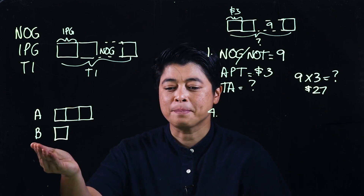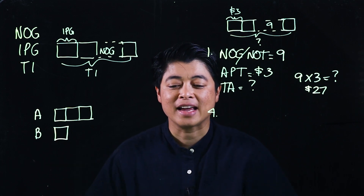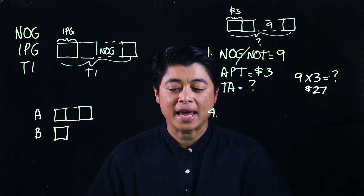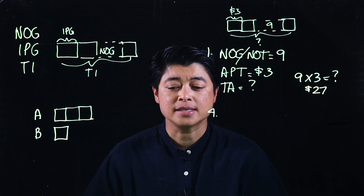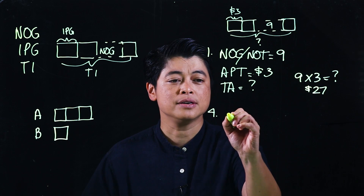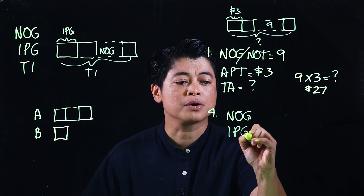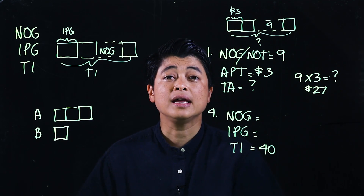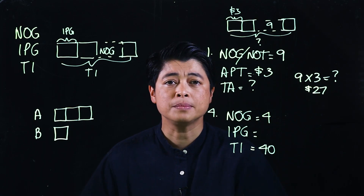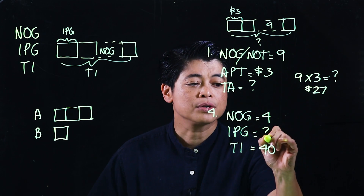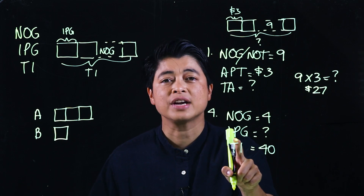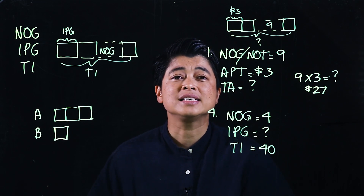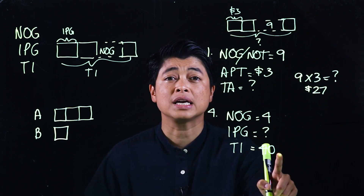For number four, a bar model is important when comparing. Problem four says: James baked 40 cupcakes and put them equally into four boxes — how many did he put in each? Number of groups, items per group, and total items: 40 cupcakes is the total, four boxes is the number of groups, and the question asks how many in each. Parents, if it's stressful, let kids identify what's easiest for them.